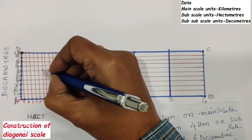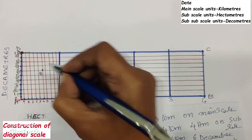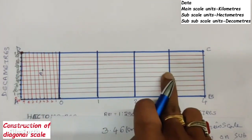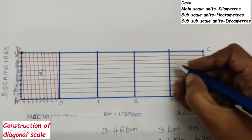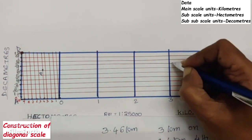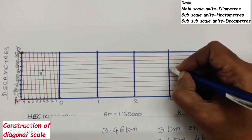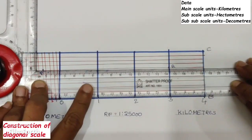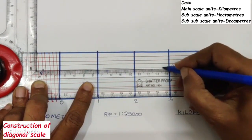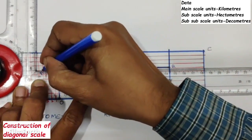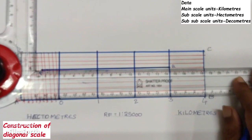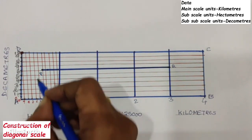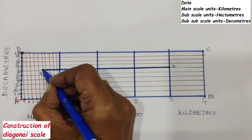Name the point on the diagonal at the 6th division as P. Draw a line parallel to the baseline passing through P, and that line will cut the perpendicular drawn at the 3-km mark. Name this intersection point Q. Darken the PQ line — this PQ line represents 3.46 km, that is 3 km, 4 hectometers, and 6 decameters.